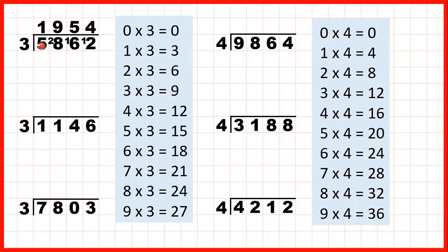Now this is a little bit different. If we look at the first digit, we have a 1 which is less than 3. So there's two different things that we could do here. Either we could spot 0 times 3 is 0, so we could write 0 in our answer line and then 1 as our remainder. But when the first digit is less than the divisor, what I like to do is take the first two digits together. So we're dividing 11 by 3, so we need a number in the 3 times table which is 11 or less.